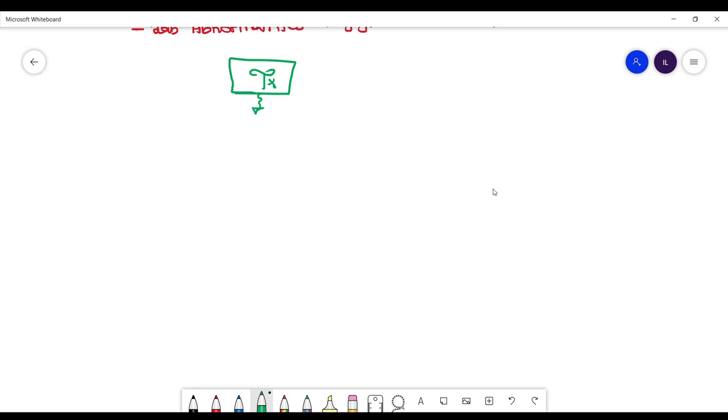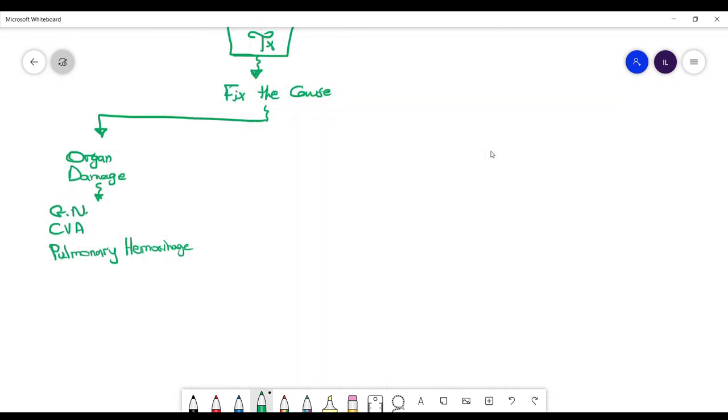For treatment, look at the cause and treat it. If there's organ damage - glomerulonephritis, strokes, or pulmonary hemorrhage - add steroids and immunosuppressive medications, which include rituximab.